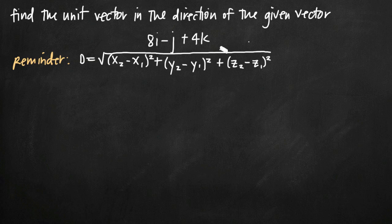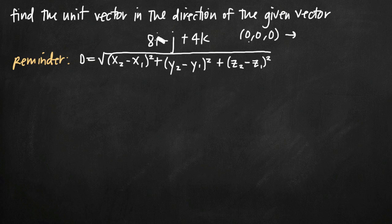The first thing we need to realize is that a vector in this form 8i minus j plus 4k is really just the vector from the origin (0, 0, 0) to the point (8, -1, 4). We take the coefficients, including the positive or negative sign, and put them into a coordinate point. So our x value is positive 8, our y value is the coefficient on the j term, which is negative 1.